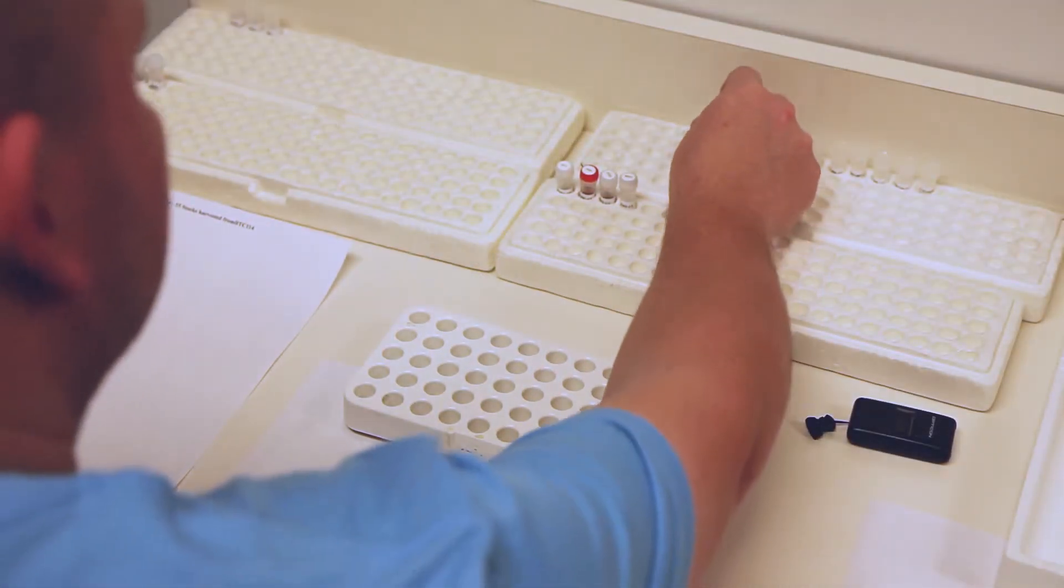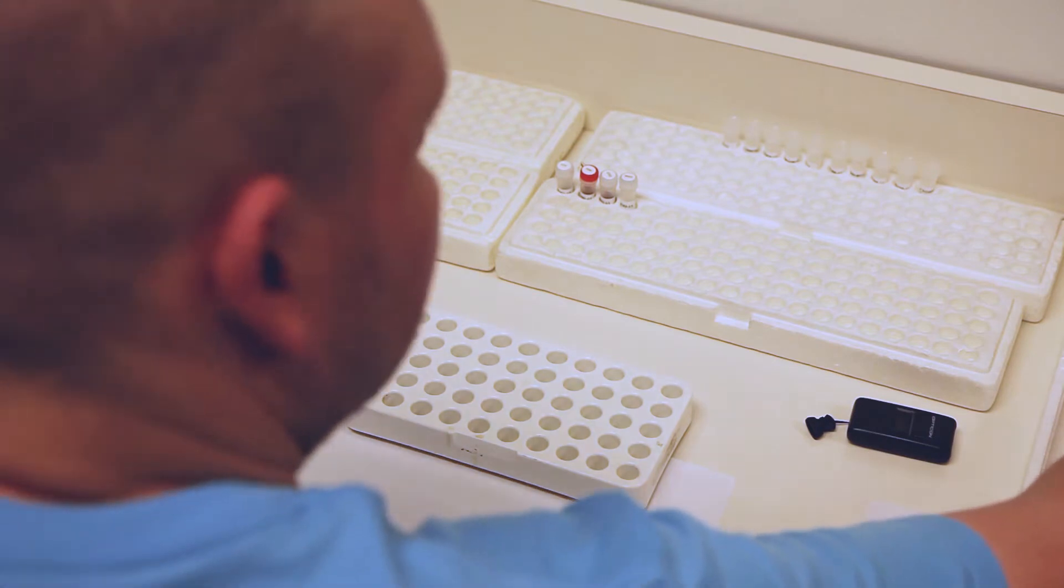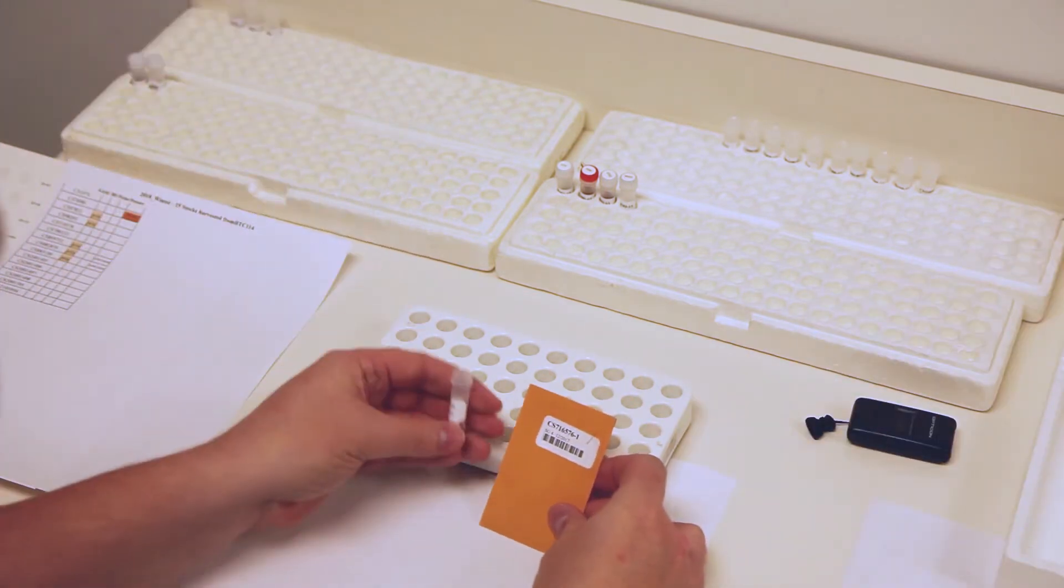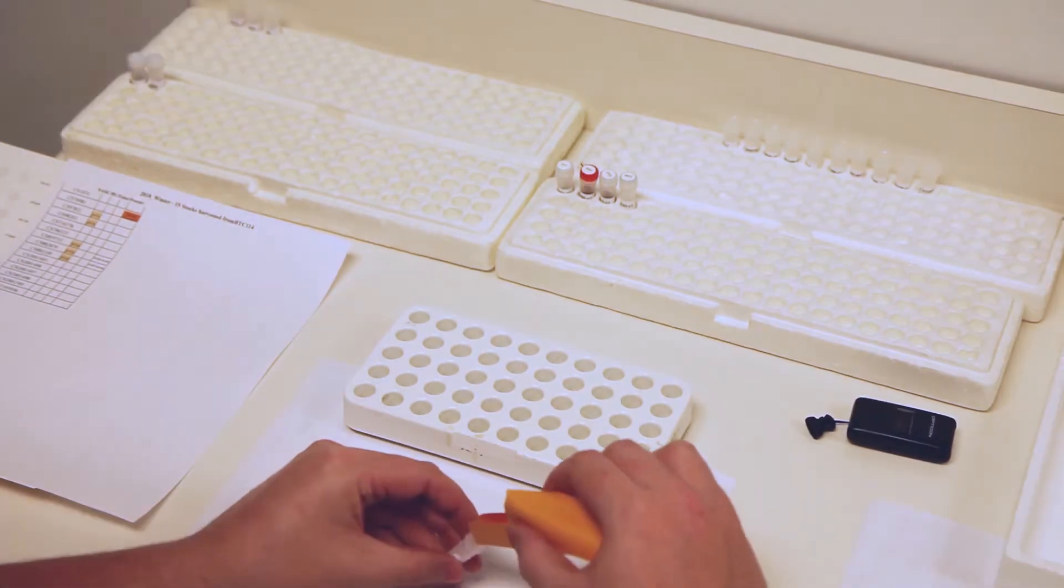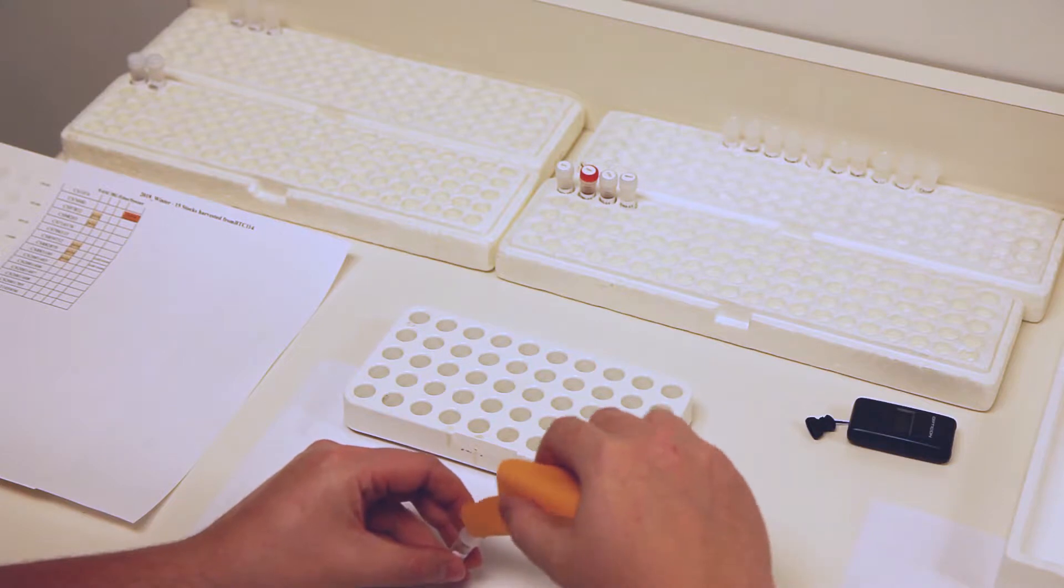In a clean working area, remove the empty vial from the tray. Pick up the seed envelope and match the stock number on the label to the label on the vial. Transfer the seeds to the vial and place a cap on the vial.